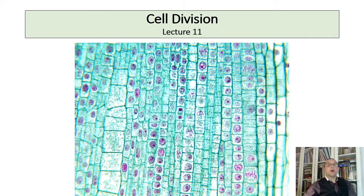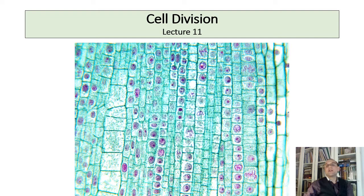Today we are going to talk about cell growth and reproduction. In 1858, the German physician Rudolf Virchow stated that all cells come from other cells. It seems such a simple and obvious statement, but in its time it was quite revolutionary. Today we know that cell division is the basis for the continuation of life.